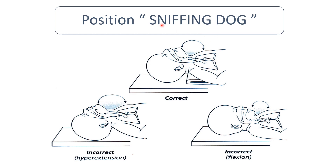Keep the baby in sniffing position by placing a shoulder roll of at least one inch. With the shoulder roll, the upper airway, larynx, and trachea are aligned in the same line. In hyperextension or flexion position, this alignment is not maintained, so the shoulder roll is essential to keep the sniffing position.